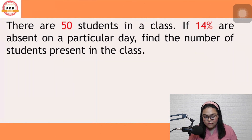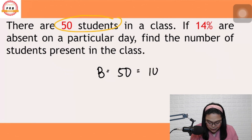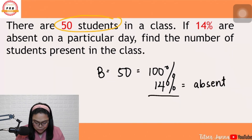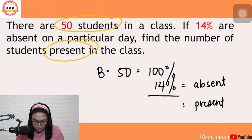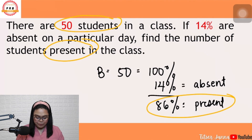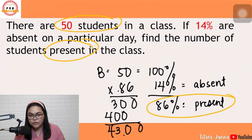Let's try the other problem. There are 50 students in a class. 14% of them are absent on a particular day. Find the number of students present in class. 50 is our base — 100%. 14% daw ay absent. Tignan nyo mabuti yung last part ng problem: find the number of students present. Ang hinahanap ay yung present — yung nandun sa klase. So, 100% minus 14% gives us 86%. Yung 86% ang imumultiply sa 50, kasi yun yung hinahanap sa problem. The answer is 43 students are present.